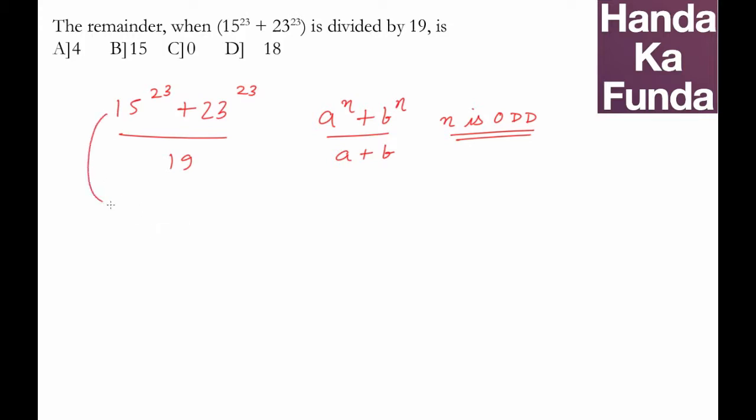That would mean the numerator 15 to the power 23 plus 23 to the power 23 is divisible by 15 plus 23. That means it is divisible by 38, and if any number x is divisible by 38, we can automatically say